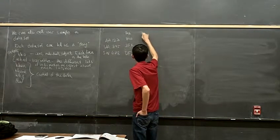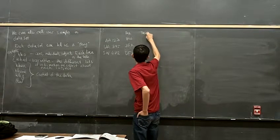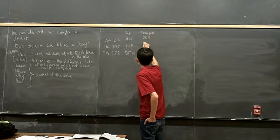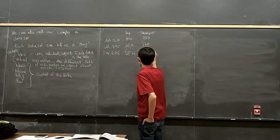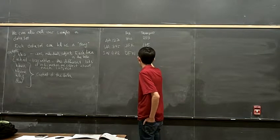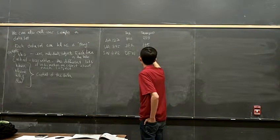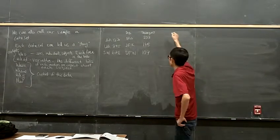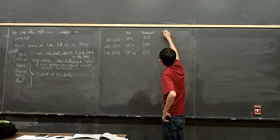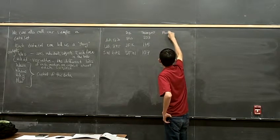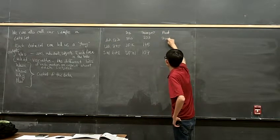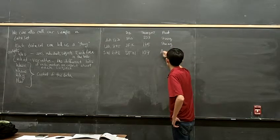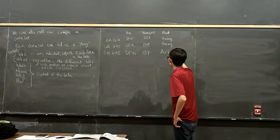And then we get the number of passengers: this one has 203, this one has 185, this one has 107. And then the manufacturer of the plane — this one's Boeing, this is also Boeing, and this is an Airbus. Okay, I'm just making information up here.